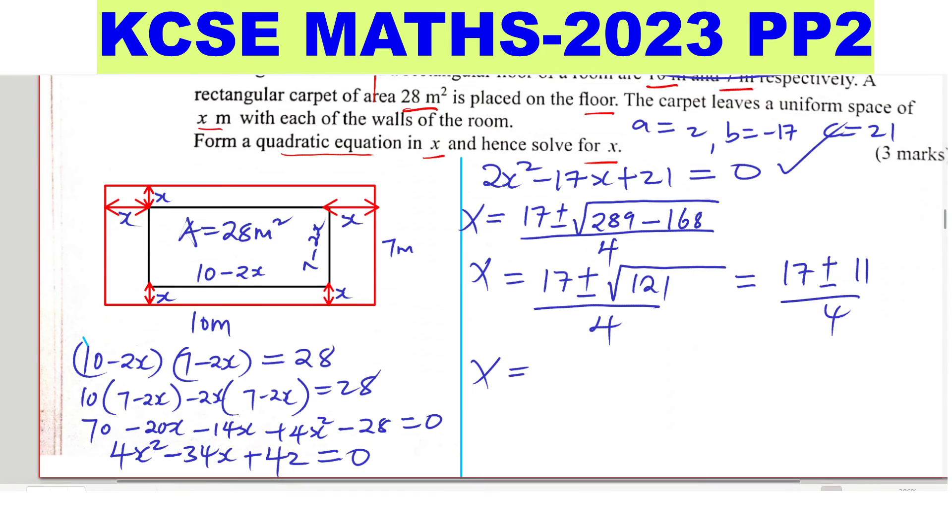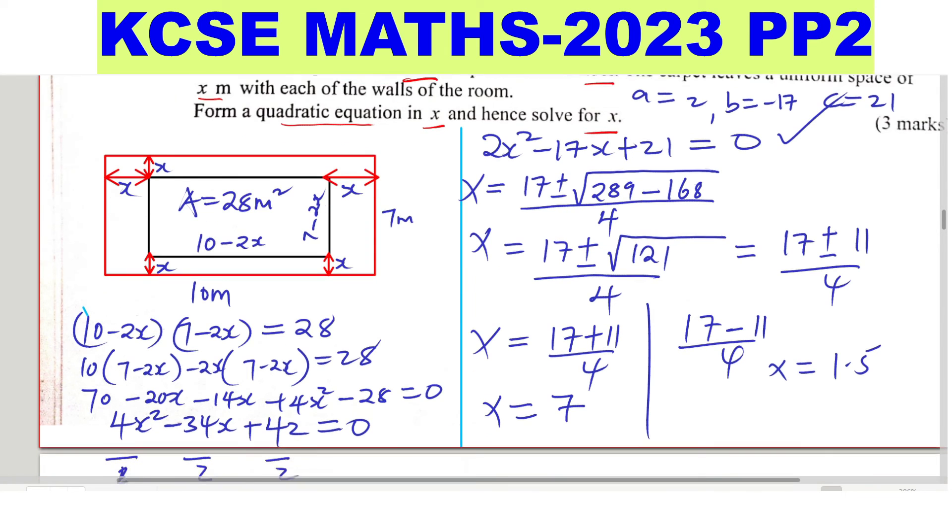So from here you can get two answers. The first one will be 17 plus 11 divided by 4, and this one will give 28 divided by 4 which will give 7. Or 17 minus 11 divided by 4. So x will be 6 over 4, it will give you 1.5. So you have two solutions.